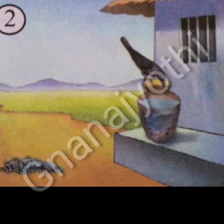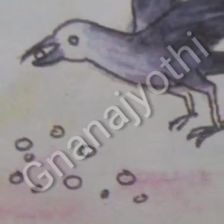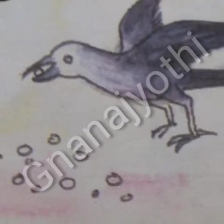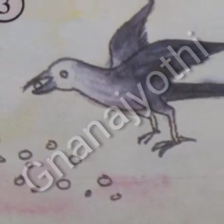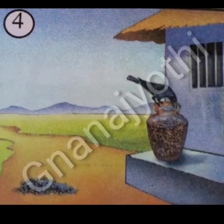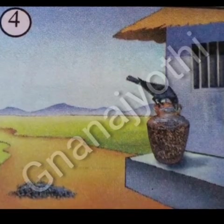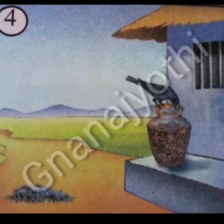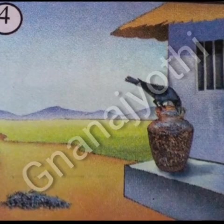He thought of a plan. He picked some stones and put them one by one into the pot. The water level in the pot came up. The crow drank the water and flew away happily.